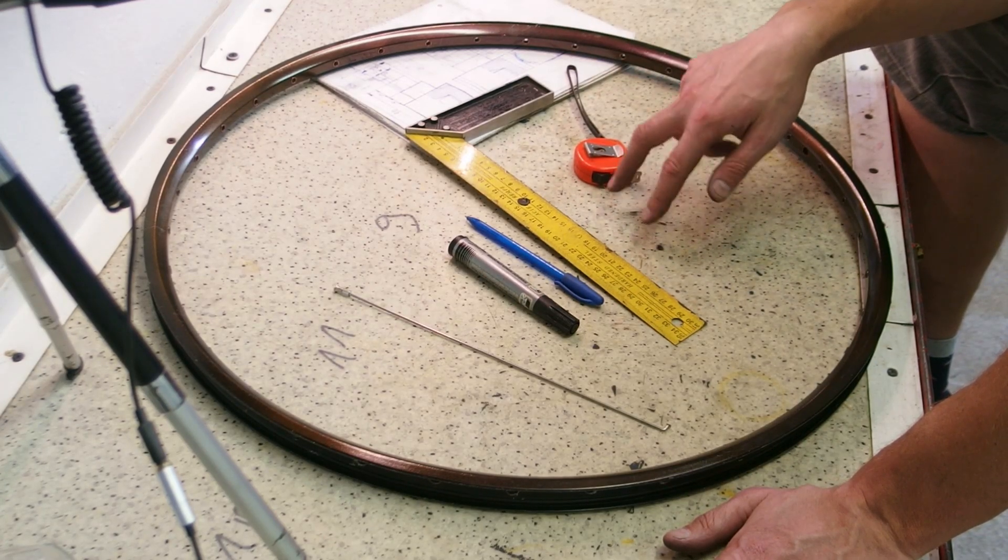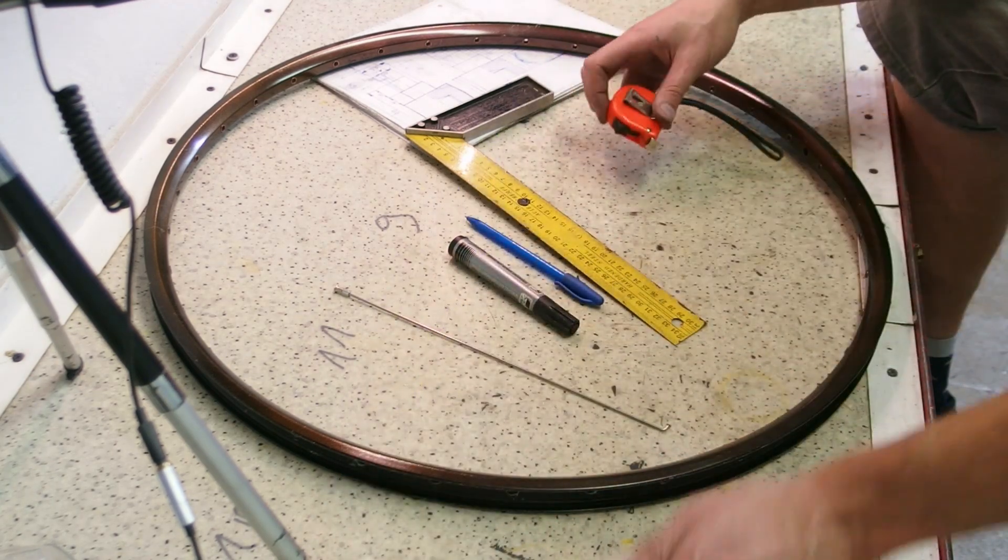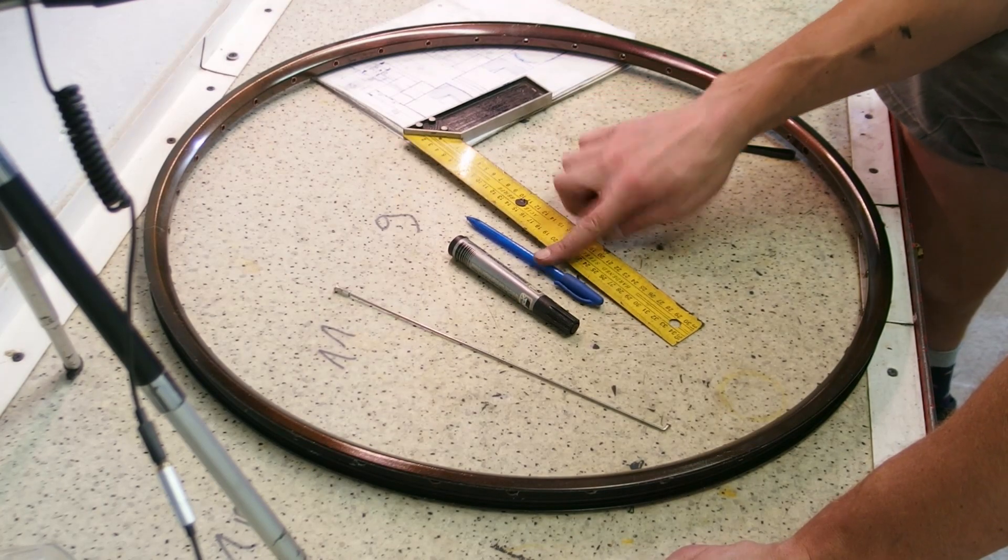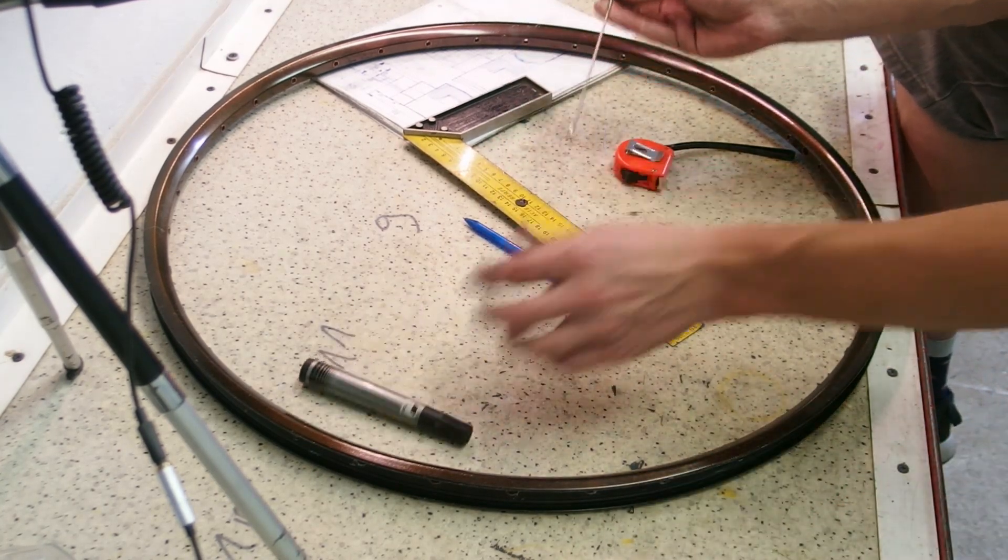Here's how to measure ERD quickly. You need a tape long enough to measure the rim, some sort of a ruler, pen, marker, and a spoke with a nipple.